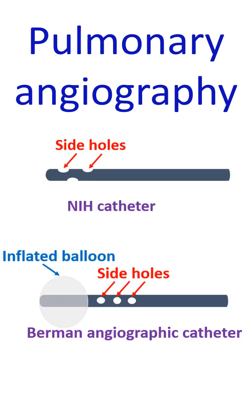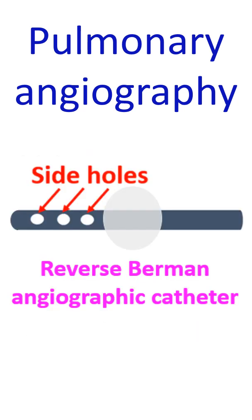Catheters other than the Grohlmann catheter have also been used for pulmonary angiography. The Hunder pulmonary catheter is another modified pigtail catheter designed for a brachiocephalic vein approach. Others include the Berman angiographic and reverse Berman angiographic catheters, both of which are balloon-tipped. In the Berman angiographic catheter, the side holes are proximal to the balloon, while in the reverse Berman angiographic catheter it is the other way around. The reverse Berman can be used to provide proximal occlusion while injecting into a branch pulmonary artery.